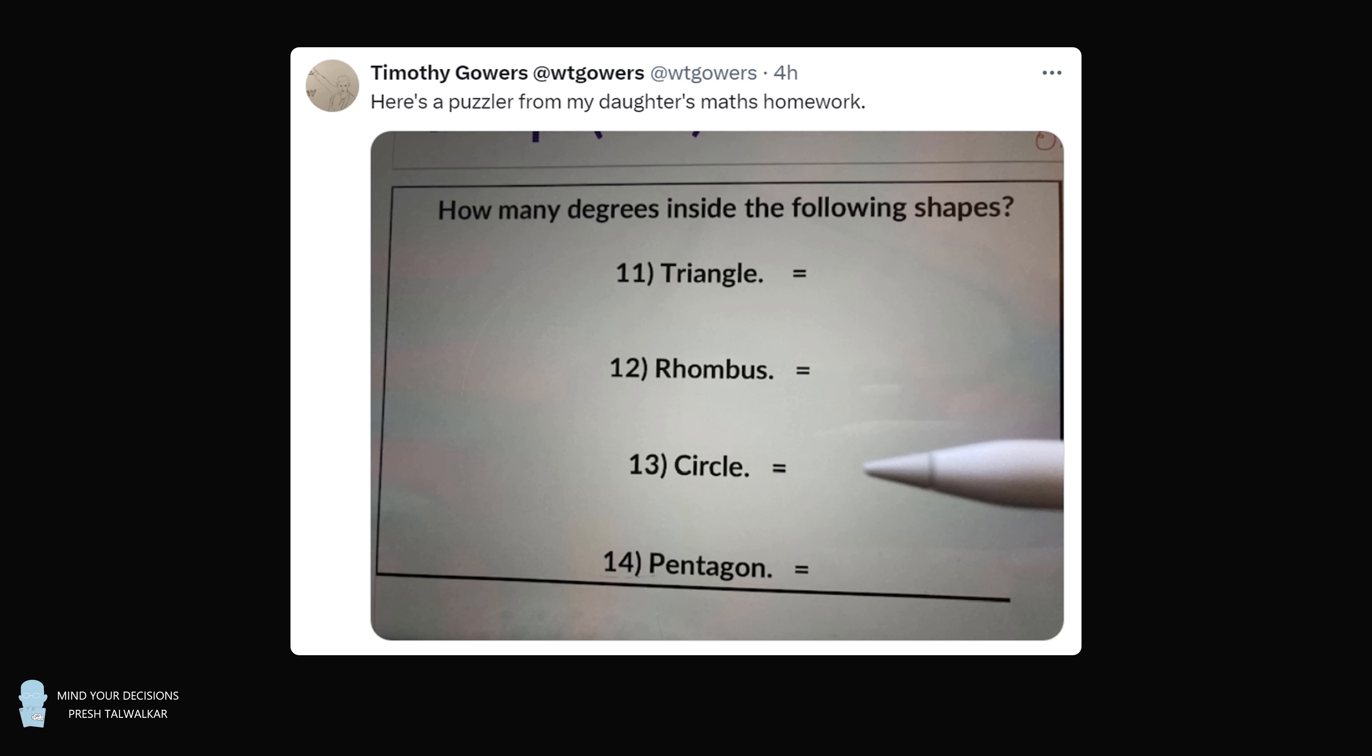How many degrees inside the following shapes? Triangle, rhombus, circle, and pentagon. So to many people, this may not even seem like a controversial question. So the sum of the interior angles in a triangle is 180 degrees. The sum inside of a rhombus, which is a four-sided quadrilateral, is 360 degrees. Then, let's skip ahead to pentagon, which will be 540 degrees.